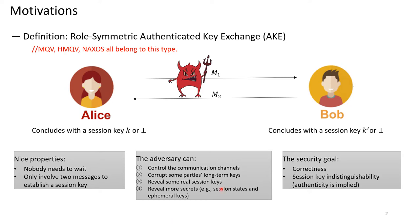In our work, we focus on the specific type of AKE, role-symmetric AKE. In such AKE, two parties Alice and Bob send their own messages without waiting for the other side, and upon receiving the message from the other side, each party can conclude with a session key or bot.